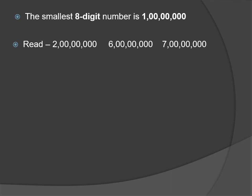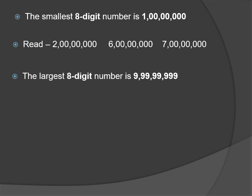The smallest eight-digit number is one crore. Some more eight-digit numbers are: two crore, six crore, seven crore. The largest eight-digit number has eight nines — that is 9,99,99,999.